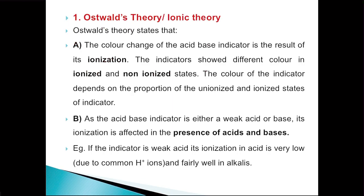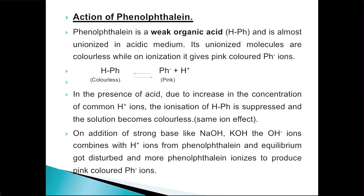For example, if the indicator is a weak acid, its ionization will be very low in acid. This is because of the common ion effect, and its ionization will be high in alkalis. So we'll explain Ostwald's theory with an example, that is phenolphthalein.